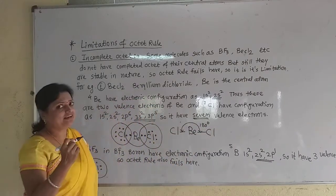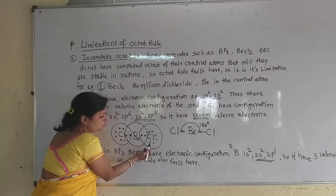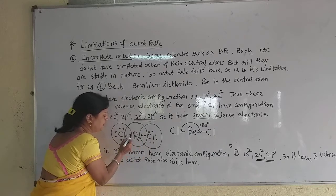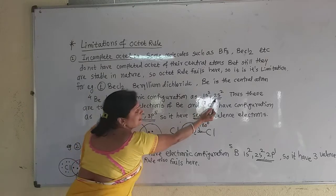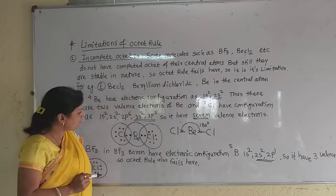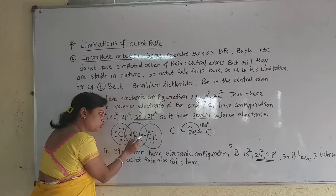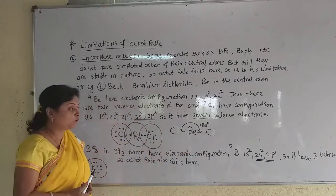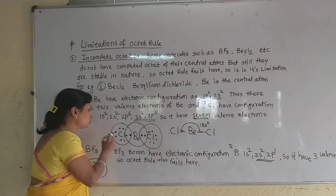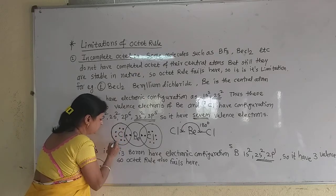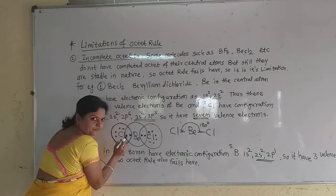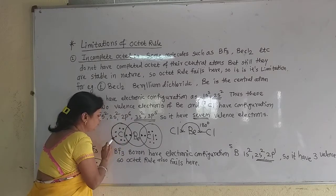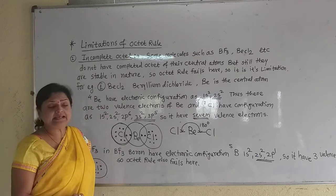So the shape of this beryllium dichloride is linear, and the bond angle between the two bonds is 180 degrees. So it is a straight molecule. Now see — chlorine has 7 valence electrons, shown here by dots. Beryllium also has its 2 valence electrons taking part in bond formation. Now, this shared pair between beryllium and chlorine also belongs to this chlorine atom. So there are 1, 2, 3, 4, 5, 6, 7, 8 electrons — chlorine has completed its octet.